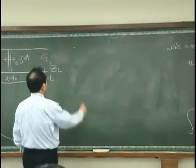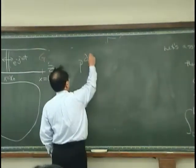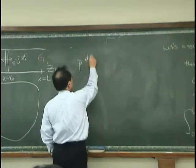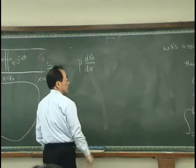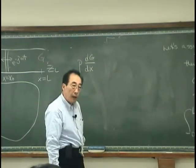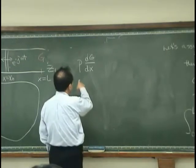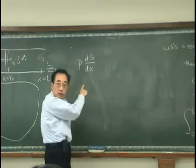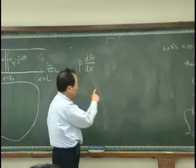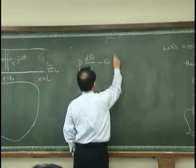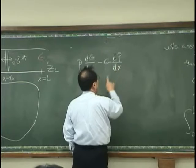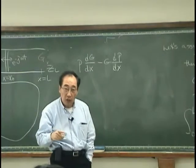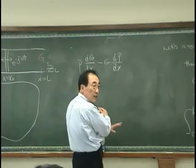What do I have? I will have P, dg dx. Then what I have? dp dx dg dx integration 0 to L, right? And I have also minus g dp dx, and I have minus dg dx dp dx from 0 to L, and those cancel out, okay?